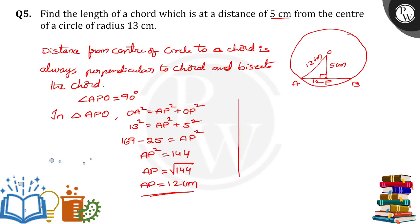We got AP is equal to 12. Then what about AB? AB is equal to 2 times of AP. So 2 into 12, we will get 24 cm. This is the length of the chord.